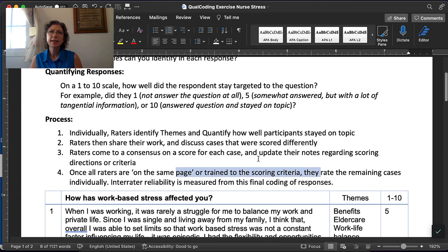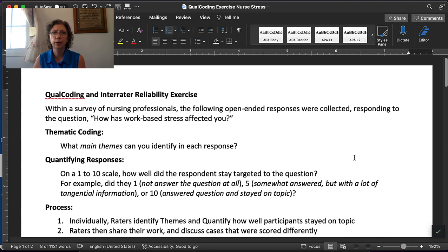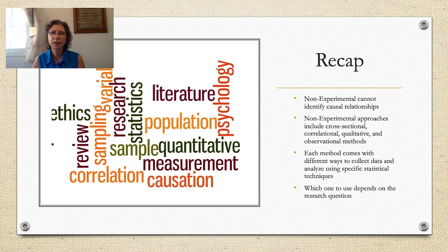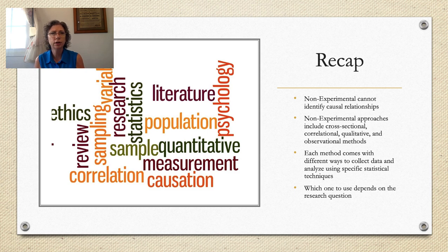That's how a qualitative design might work — both identifying themes and quantifying something specific in a qualitative data set. Thank you for spending time with me in chapter 6 on non-experimental research. Some takeaways: non-experimental cannot identify causal relationships, but these approaches are used when the research question is appropriate and we're not looking for causation. The approaches include cross-sectional, correlational, qualitative, and observational methods — each with different ways to collect data and analyze it using specific statistical techniques. Which one to use depends on the research question.